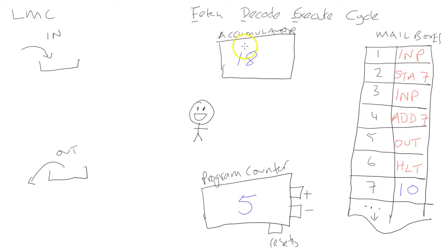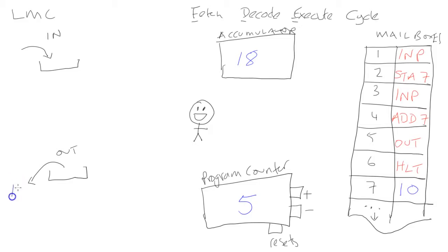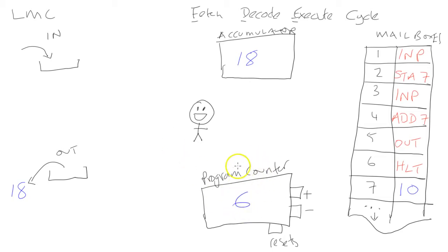Having done that, the program counter increments from four to five. Position five says OUT, so he executes that instruction: he takes 18 and transfers it to the out tray — 18 goes there, still in the accumulator but he made a copy. Having done that, he increments the program counter to six.